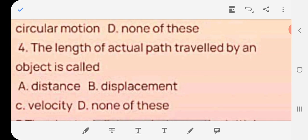The length of actual path traveled by an object is called A distance, B displacement, C velocity, D none of these. The correct answer is A distance.